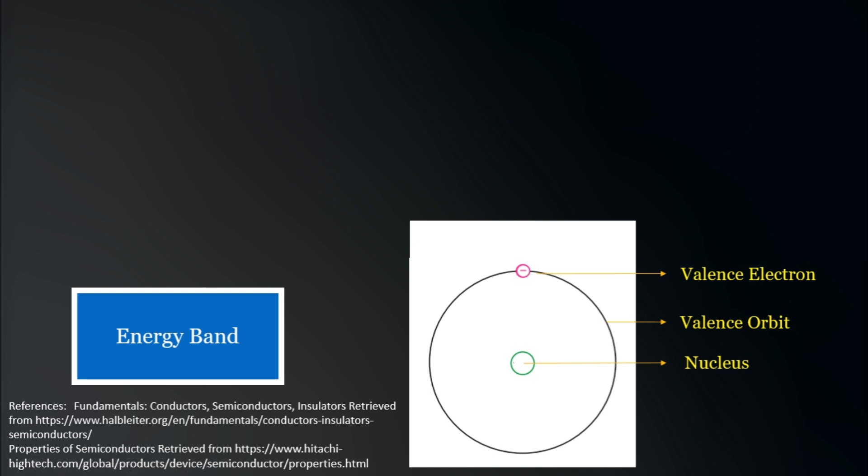Due to the distance of the valence electron from the nucleus, its attraction to the protons at the center is weaker. Remember that the valence electrons are found on the outermost orbit. In other words, the larger the orbit of an electron, the weaker is its attraction to the nucleus.